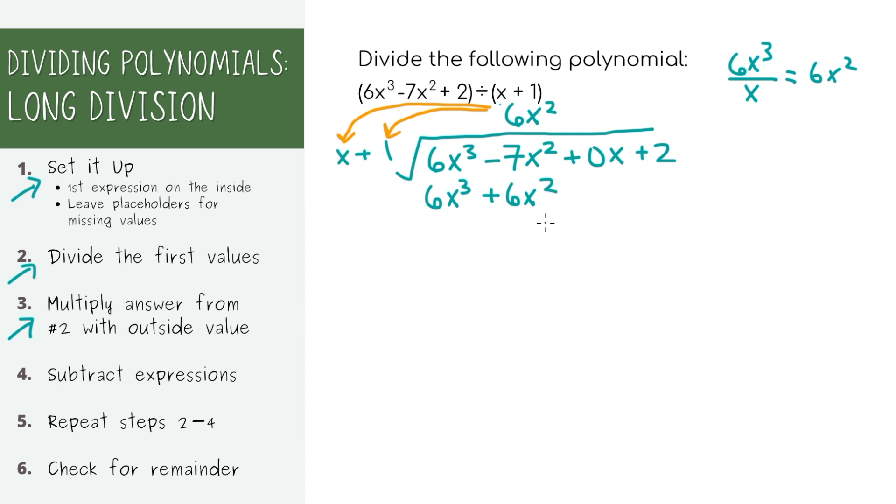Our next step is to subtract these expressions. The 6x cubes will cancel out when you subtract them, which is exactly what we wanted. We should be canceling out a term each time or else we're doing our second step wrong. Negative 7x squared minus 6x squared is negative 13x squared. And don't forget all of the rest of these terms. Let's just bring them down since there's nothing to subtract them with.